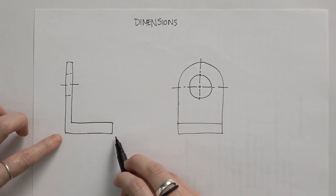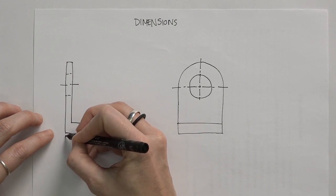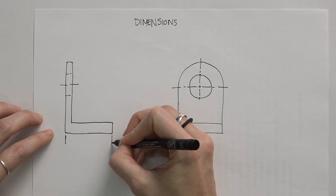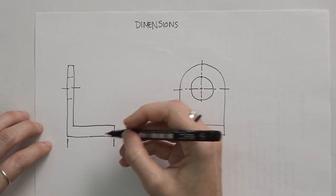When we have a specific component and we need to know what the dimensions are, we first draw extension lines. And our extension lines are just slightly away from the component, so a small gap between the component and the extension line.